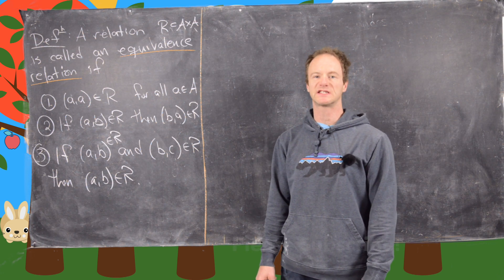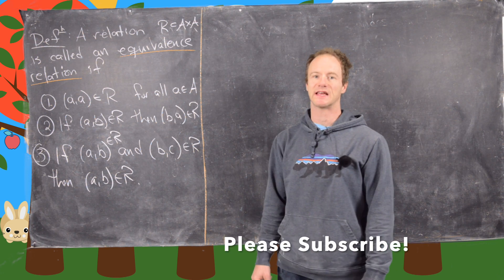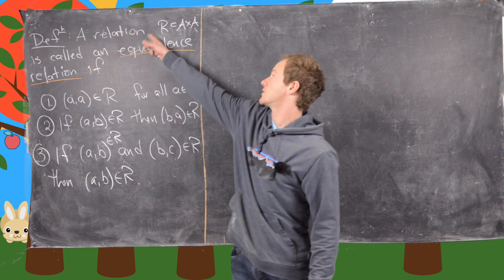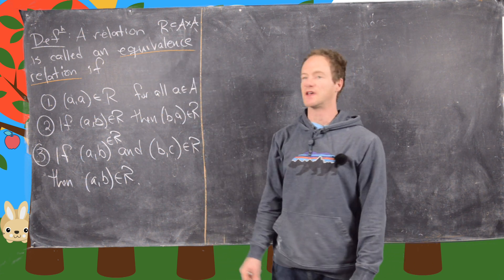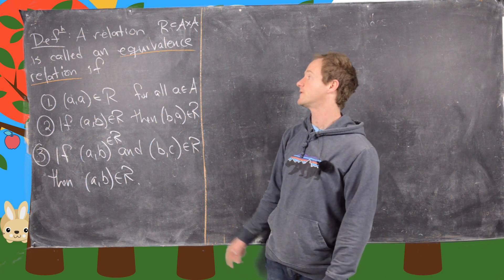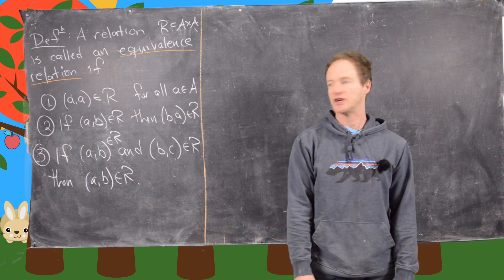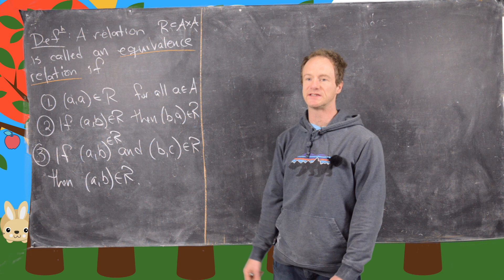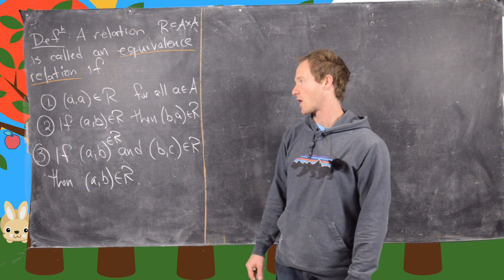Okay, in this video we want to look at a special type of relation known as an equivalence relation. So recall that a relation is just a subset of the cross product of a set with itself, and we call that relation an equivalence relation if it satisfies these three following properties.